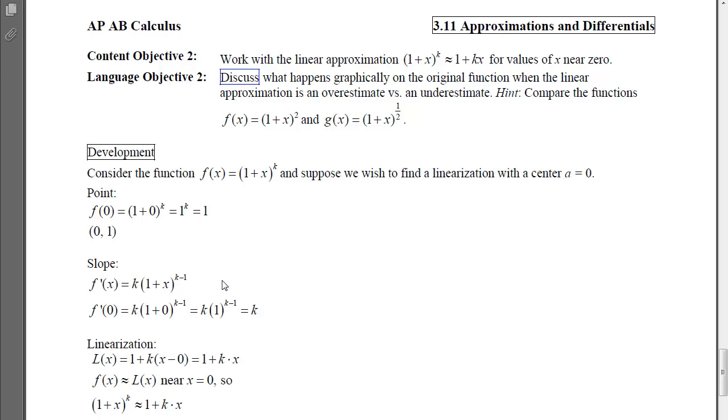In order to write the linearization or the tangent line, I need the slope evaluated at the point of tangency. So I will plug in x = 0 and I'll end up with a k. So if I write the linearization, it is the y coordinate, which is 1, plus the slope, which is k, times x minus the x coordinate.